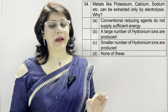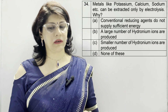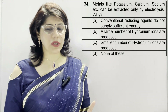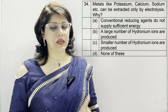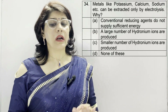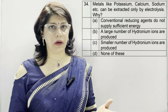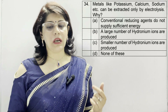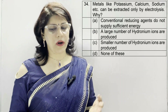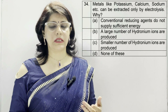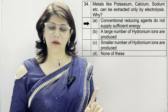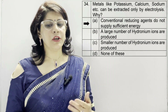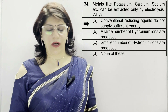In question number 34: metals like potassium, calcium, sodium etc. can be extracted only by electrolysis. Why? A: conventional reducing agents do not supply sufficient energy. B: a large number of aluminium ions are produced. C: smaller number of aluminium ions are produced. D: none of these. The correct option is A — conventional reducing agents such as carbon, carbon monoxide, and hydrogen do not supply sufficient energy to extract these highly reactive metals.